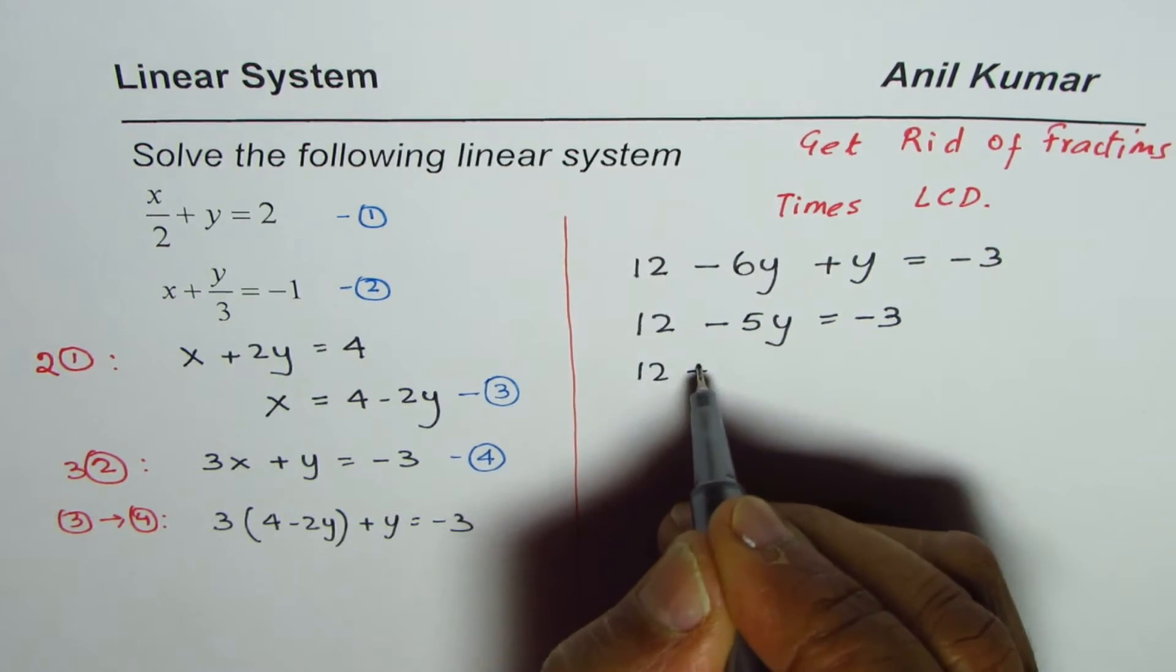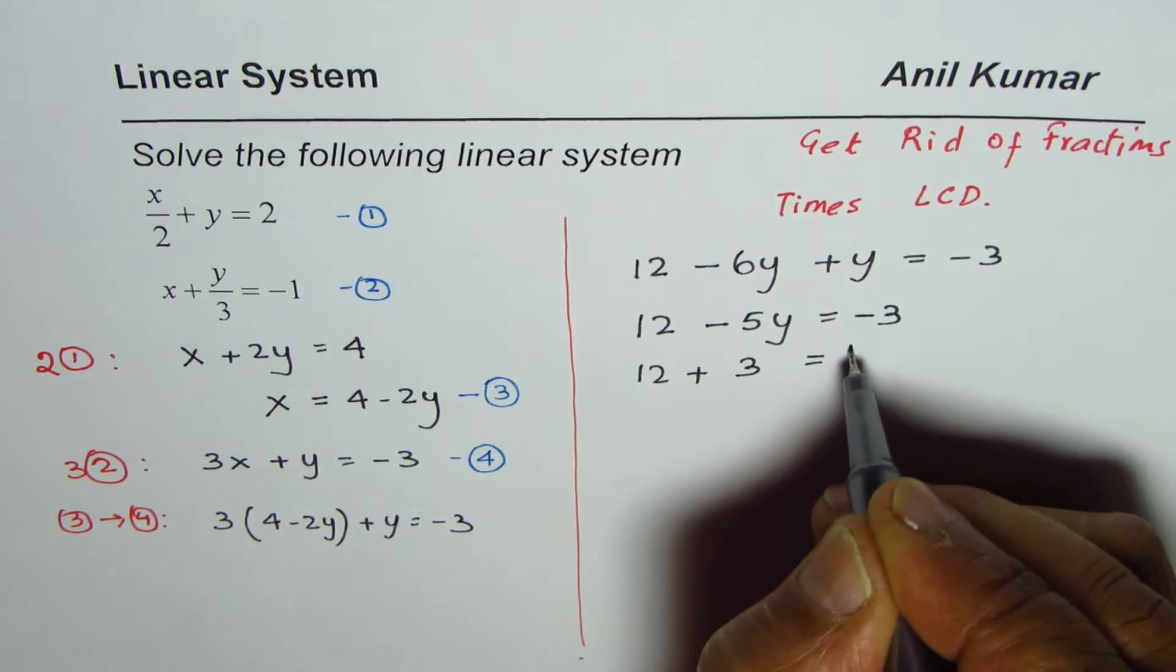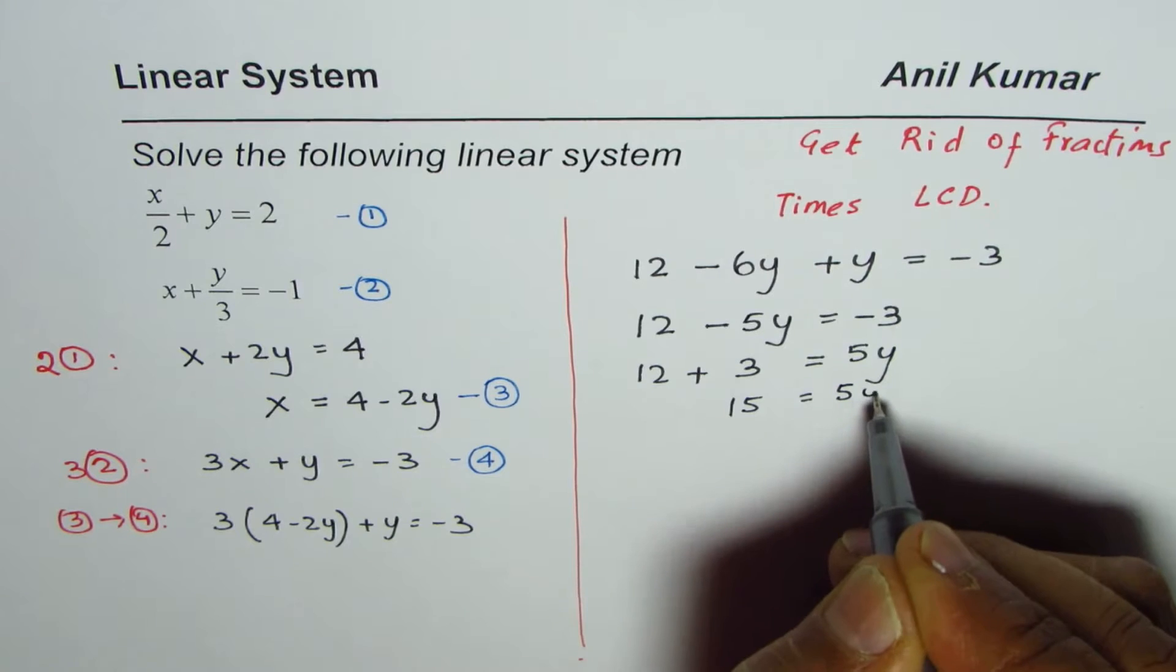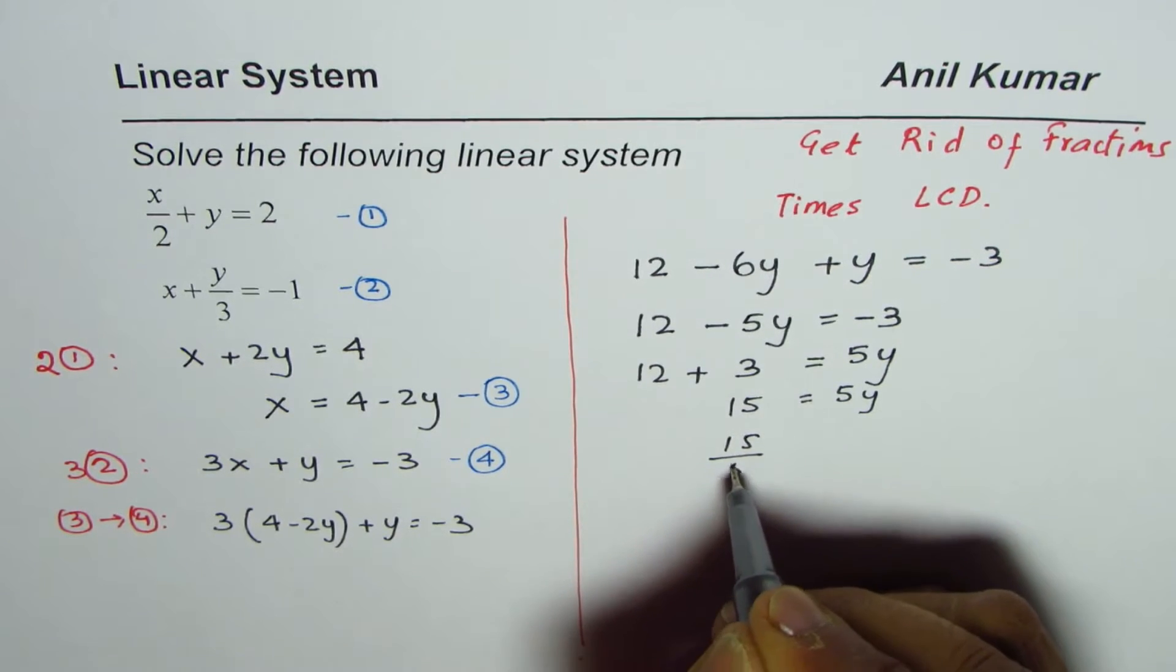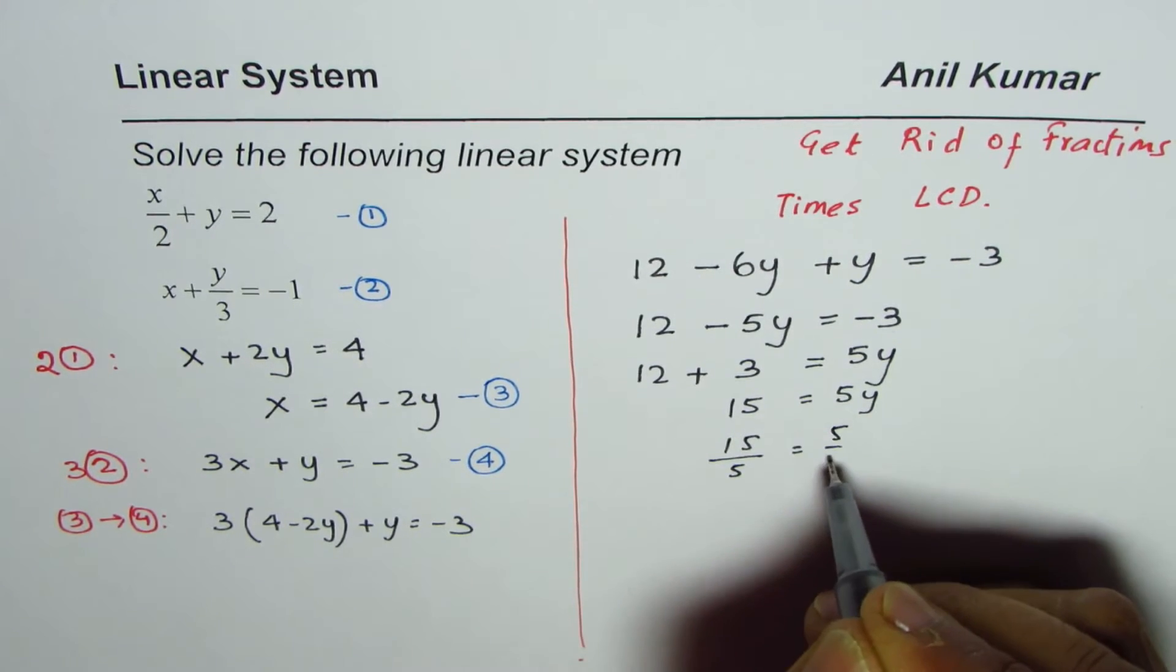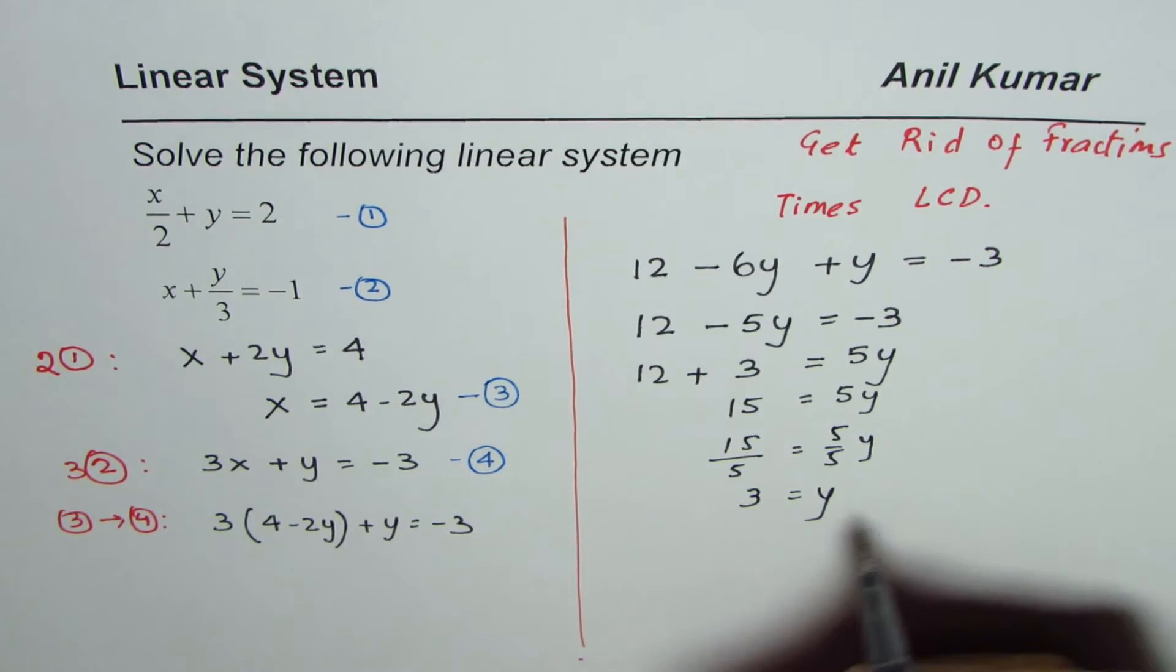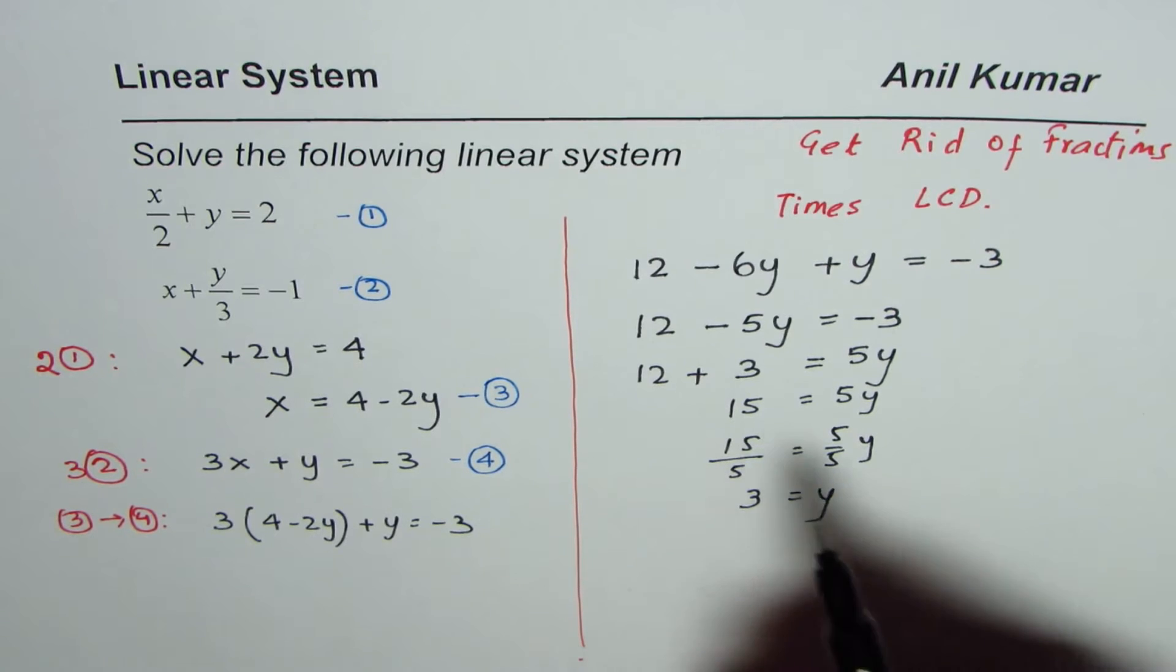Bringing 3 to this side we get 12 plus 3 equals 5y, 15 equals 5y. Dividing by 5 gives us the value of y as 3. So we get y equals 3 and we call this equation number 5.